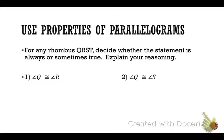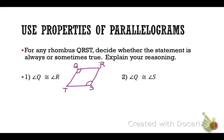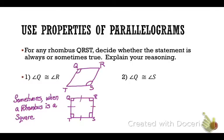For any rhombus QRST, decide whether the given statement is always or sometimes true. I'll draw a rhombus Q, R, S, T. I know that opposite angles of a rhombus are congruent because it's a parallelogram, so Q is always congruent to S. Now if I draw another kind of rhombus — a square, since a square is also a rhombus — then Q is congruent to all angles including R. So angle Q is congruent to angle R only sometimes, when the rhombus is a square, but Q is congruent to S always.